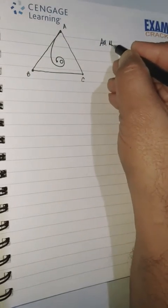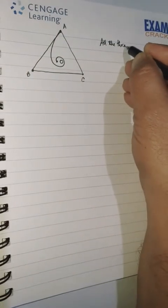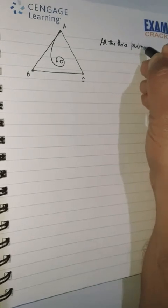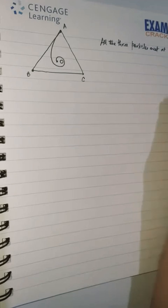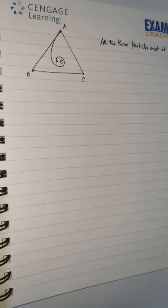So all three particles meet at point O, which is the centroid of the triangle. Now let us concentrate on the path taken by point A. What is the question?